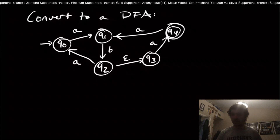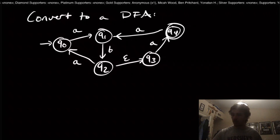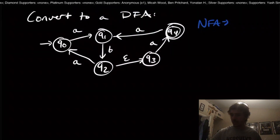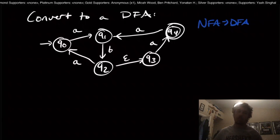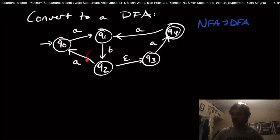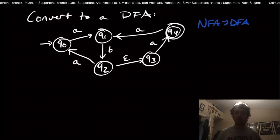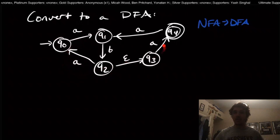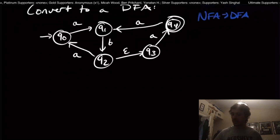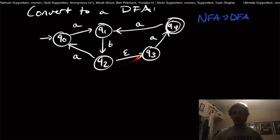Hi and welcome back to another edition of Easy Theory. Today we're going to continue from our lecture series. Last time we were talking about the conversion from an NFA to a DFA, where we modeled the DFA as sets of states in the NFA and related different sets to each other. We're going to do a real live example right here, because the previous example didn't have any epsilon transitions, and this one does.